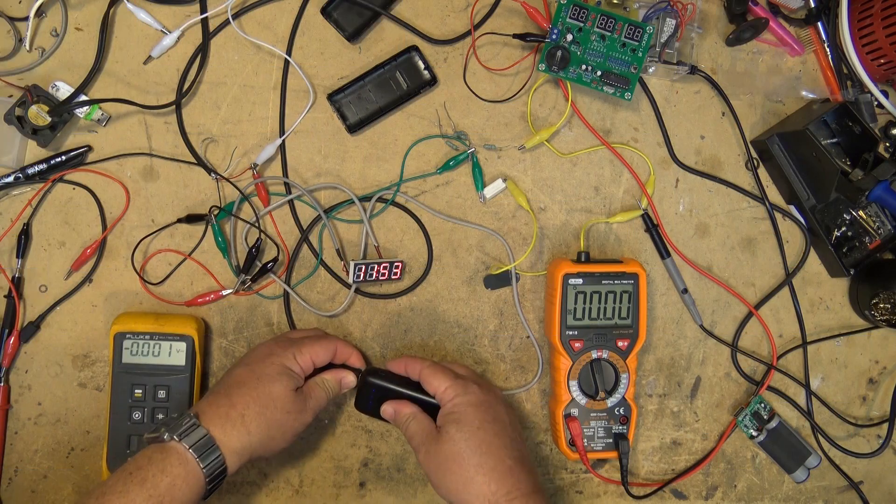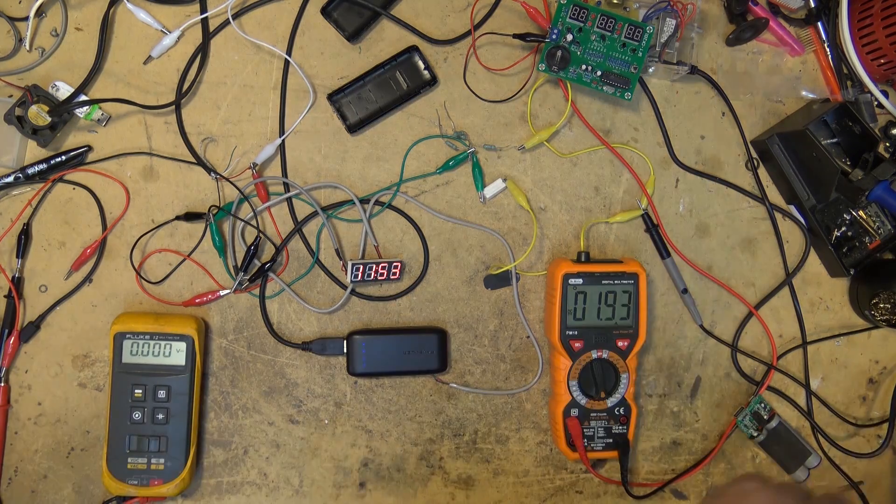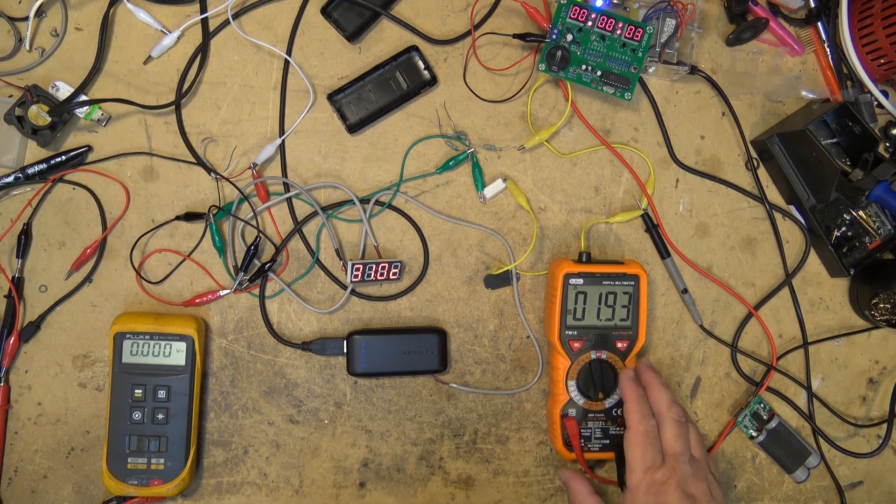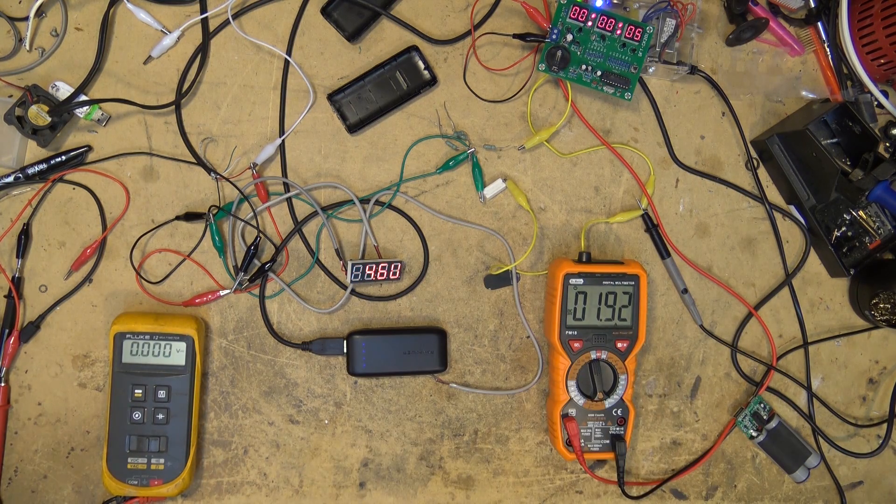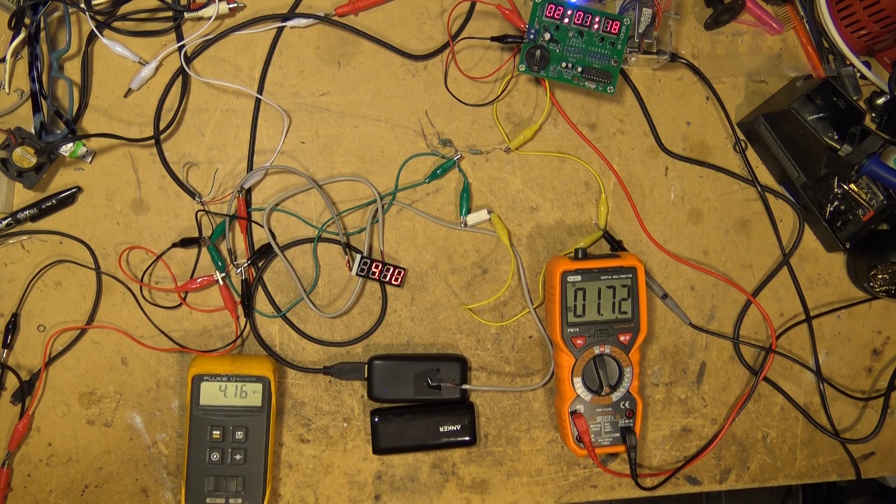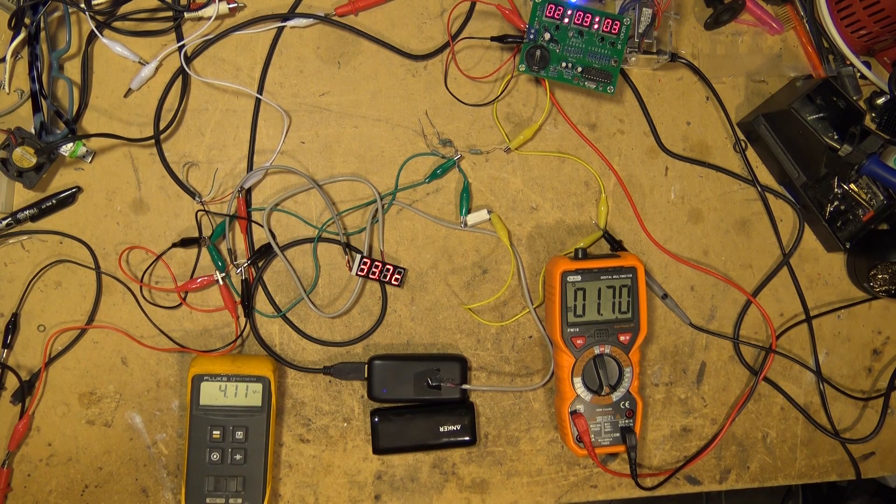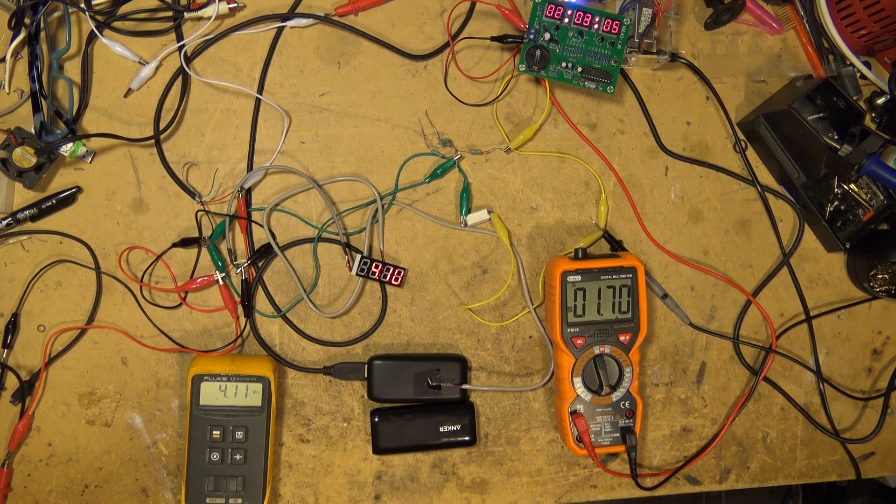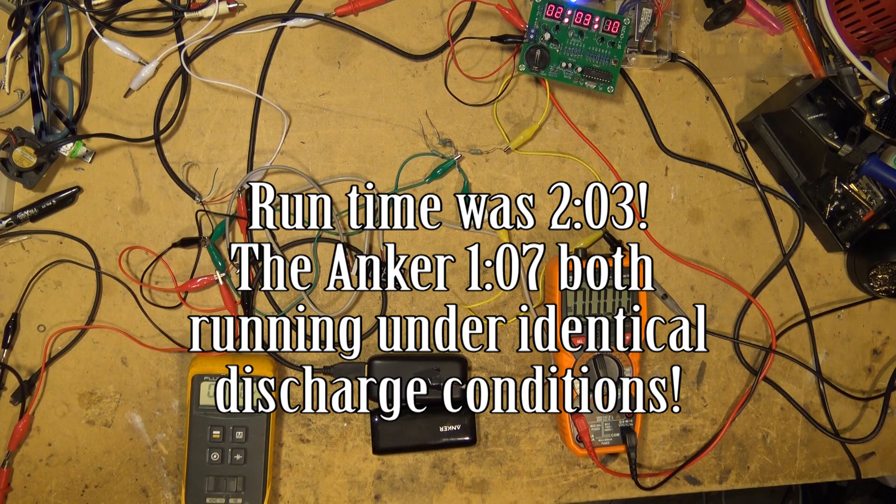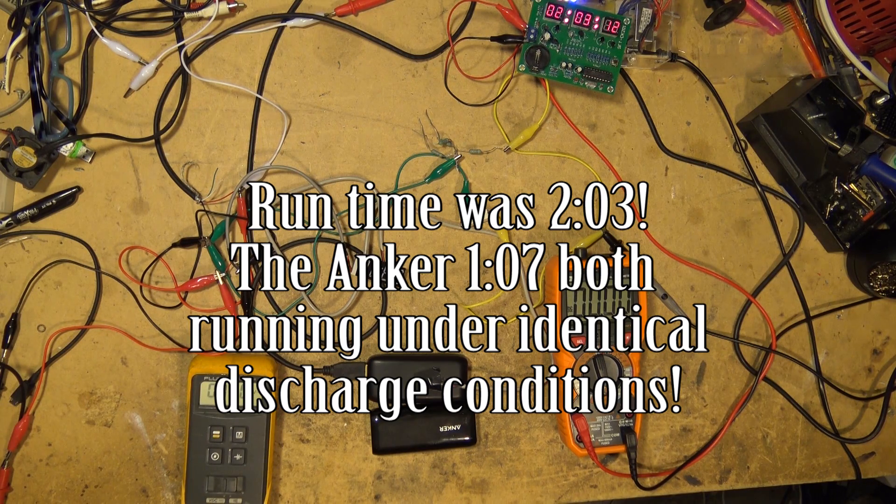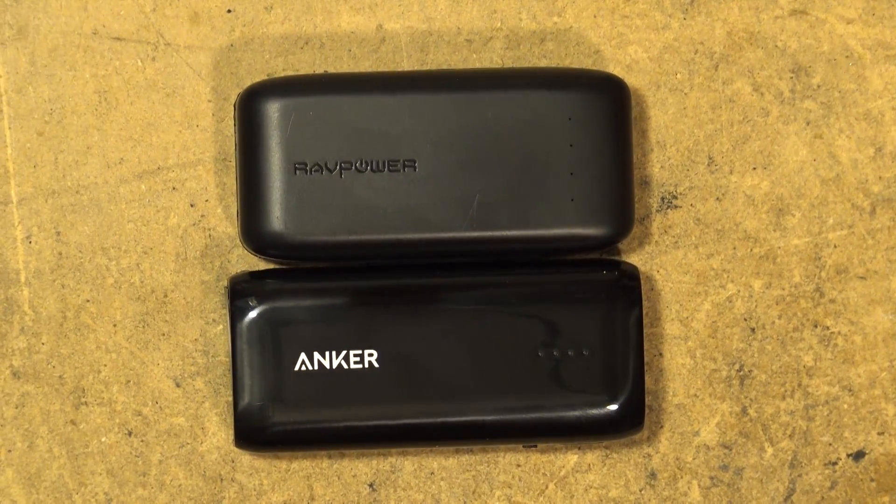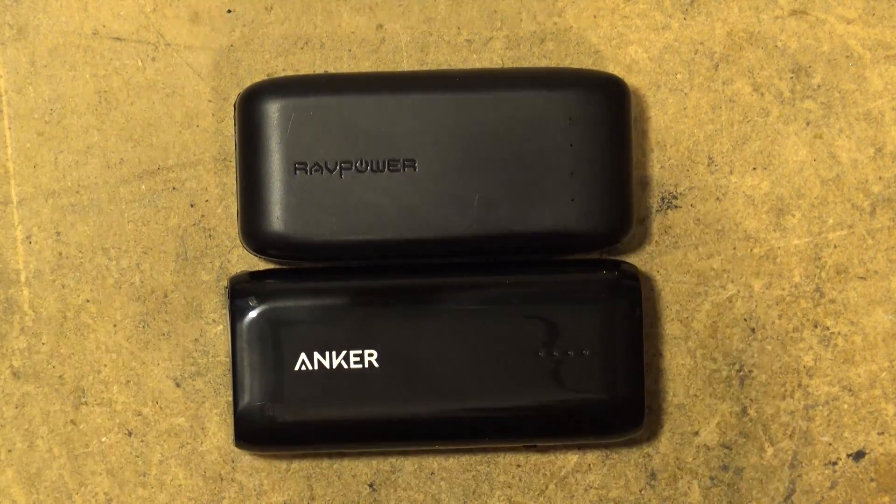We're just going to plug this one in and start the time clock running again. We're drawing 1.93 amps. Well, that's it, it just shut down. Two hours and three minutes running the identical discharge setup that we used on the Anker which only ran for one hour and seven minutes. I hope you enjoyed this video and we'll catch you in the next one real soon. Bye for now.